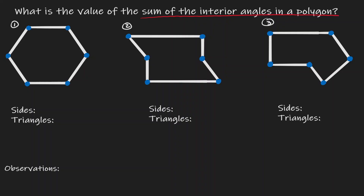If we concentrate on polygon 1, notice that here we have 1, 2, 3, 4, 5, 6 different interior angles. And what we want to know is, what value will we get if we add all of them up? Well, one thing to notice is that I can choose a vertex.